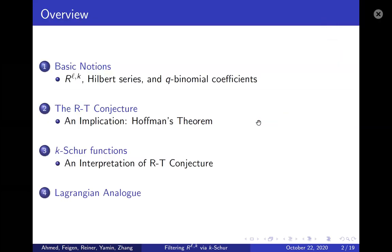I'll give an overview of what we'll be covering in this presentation. First, we'll cover some basic notions including the ring R_{l,k}, Hilbert series, q-binomial coefficients. Second, we'll talk about the Reiner-Tudose conjecture and Hoffman's theorem. Third, we'll discuss k-Schur functions and an interpretation of the Reiner-Tudose conjecture. Fourth, we'll cover a Lagrangian analog of the Reiner-Tudose conjecture.